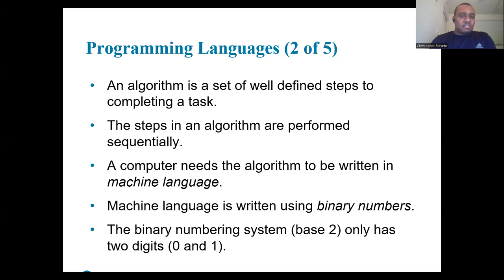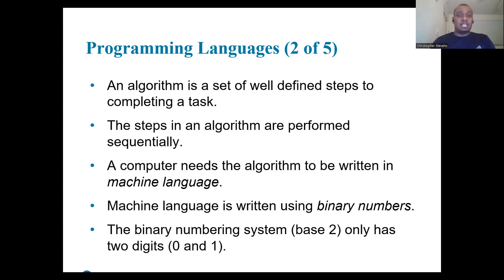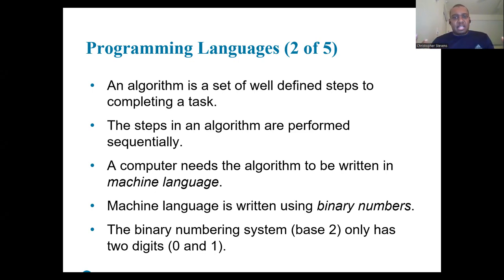To appreciate Java's significance, let's understand why it was developed. An algorithm is a set of well-defined steps to complete tasks, which a computer needs in machine language, written using binary zeros and ones. Each CPU has its own machine language, such as the Motorola 68000 series or Intel x86 series.